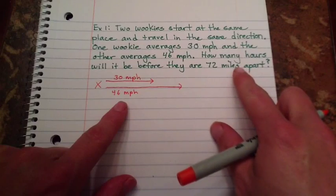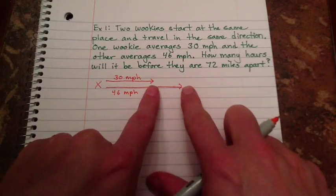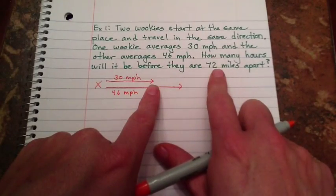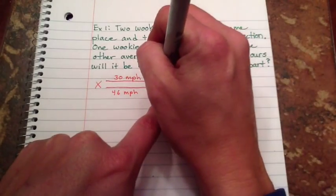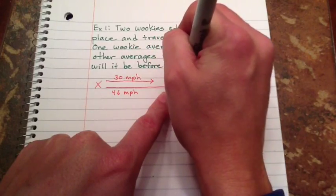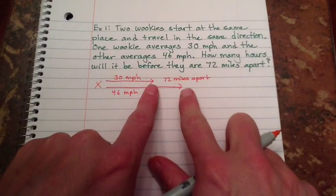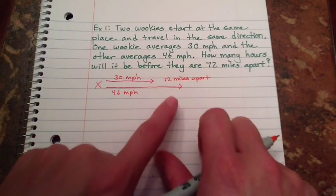What I'm looking for is when are they going to get to this space being 72 miles difference? So we're looking for when that space right there is 72 miles.